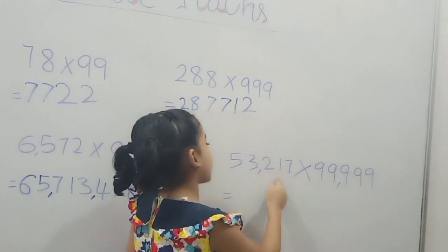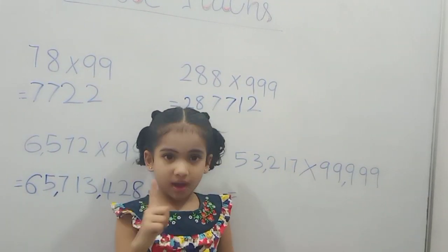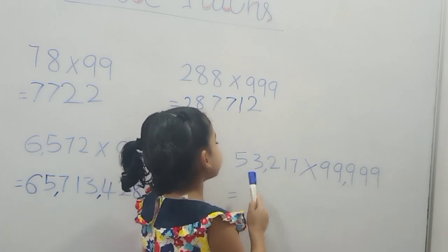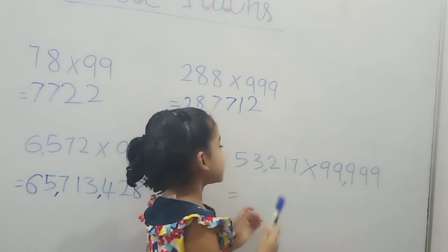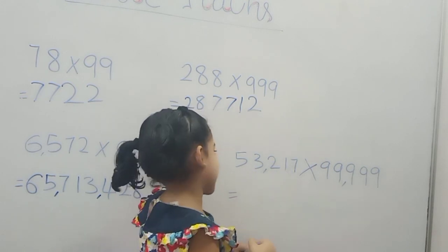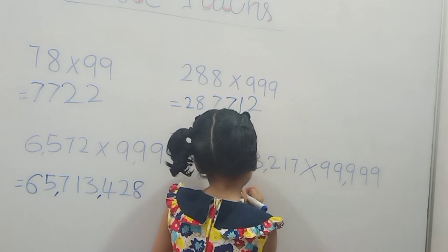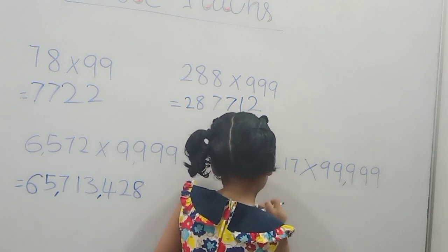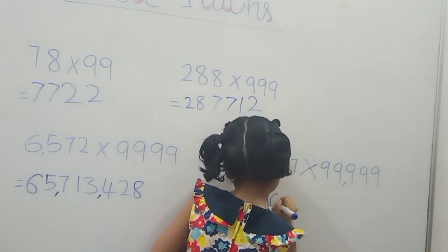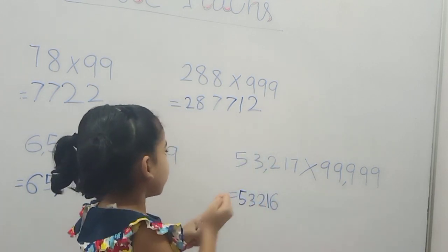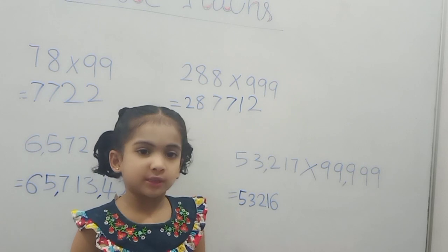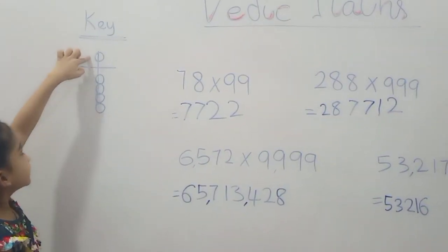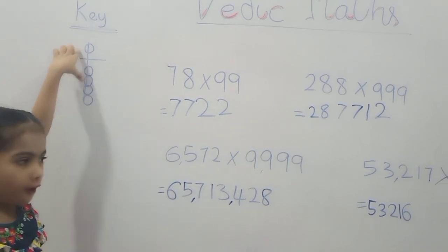5, 3, 2, 1, 7 minus 1. Yes, correct. The answer is 5, 3, 2, 1, 6. For 5, you need to go for the key. Take 5, so have 4. So write 4. For 3 you need to look for key. Take 3: 1, 2, 3. So left 6.